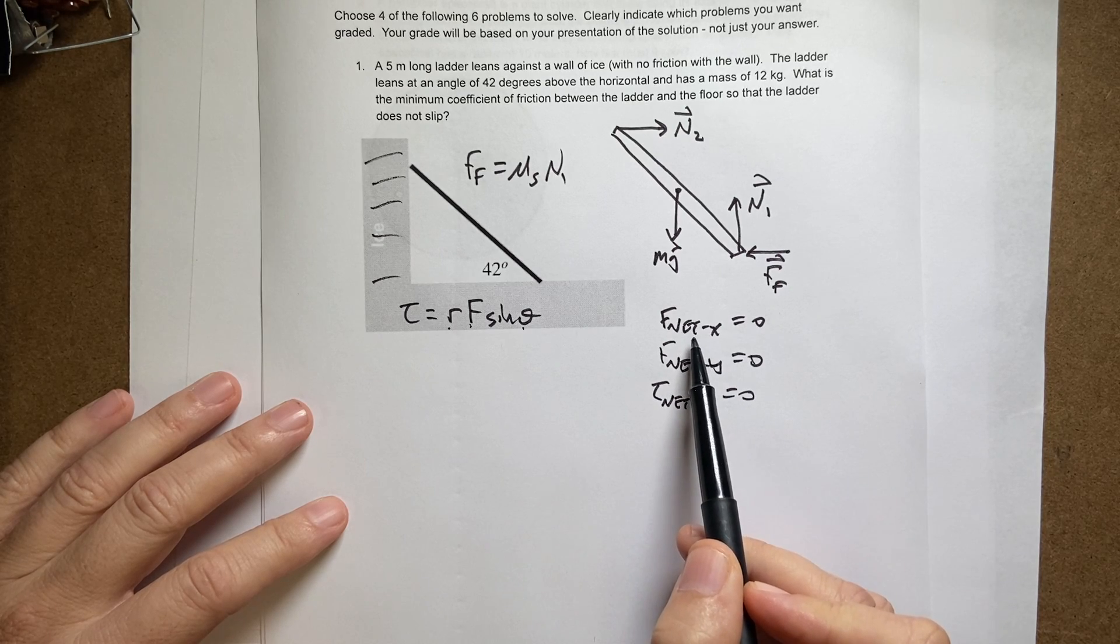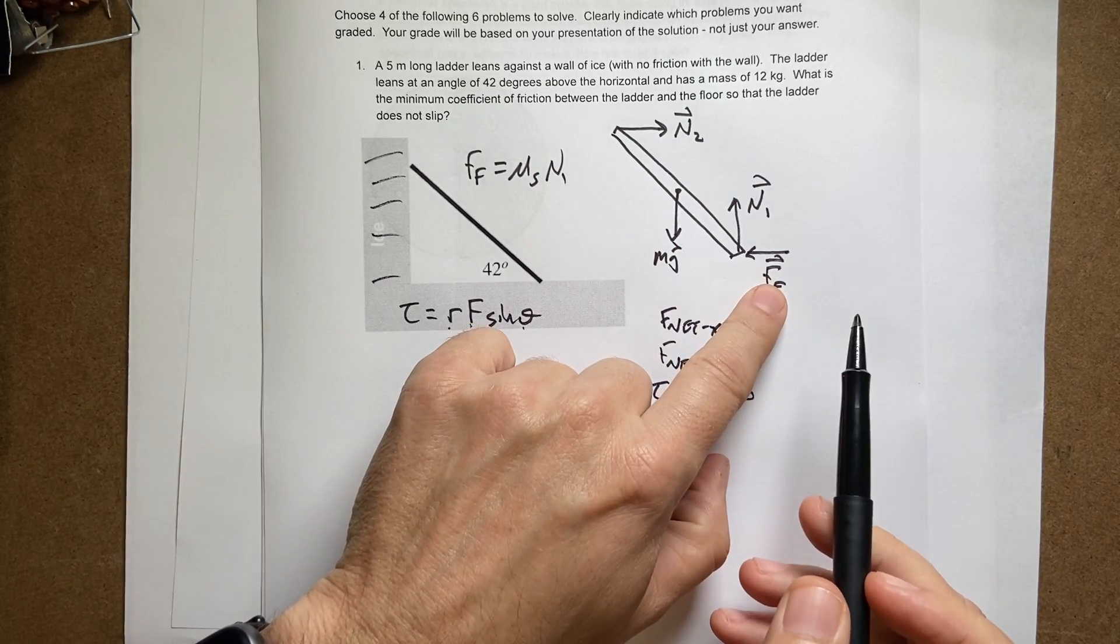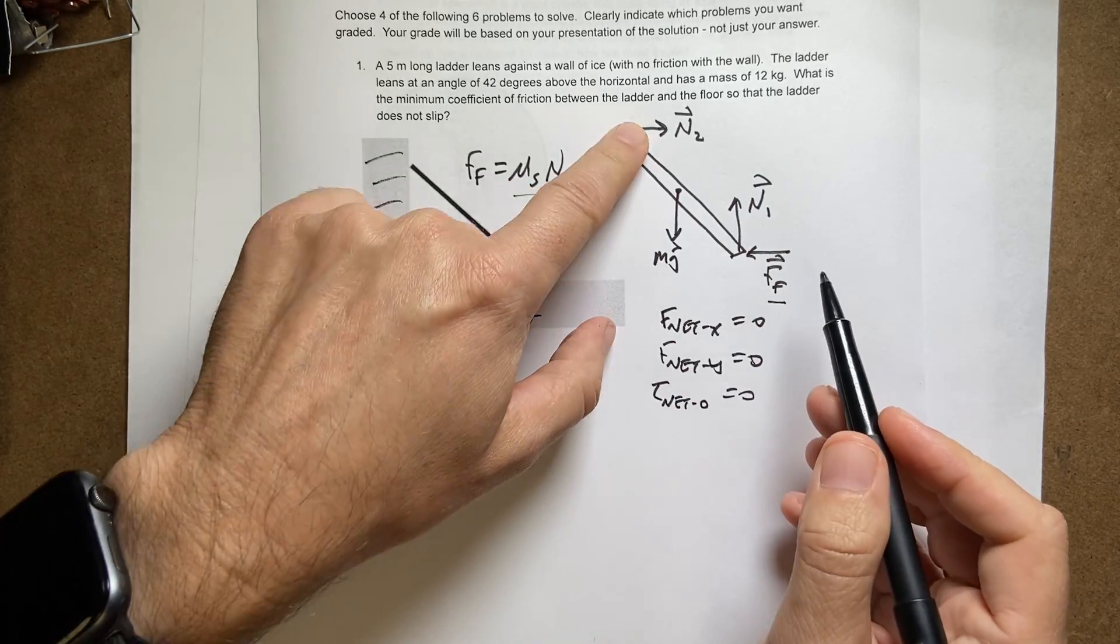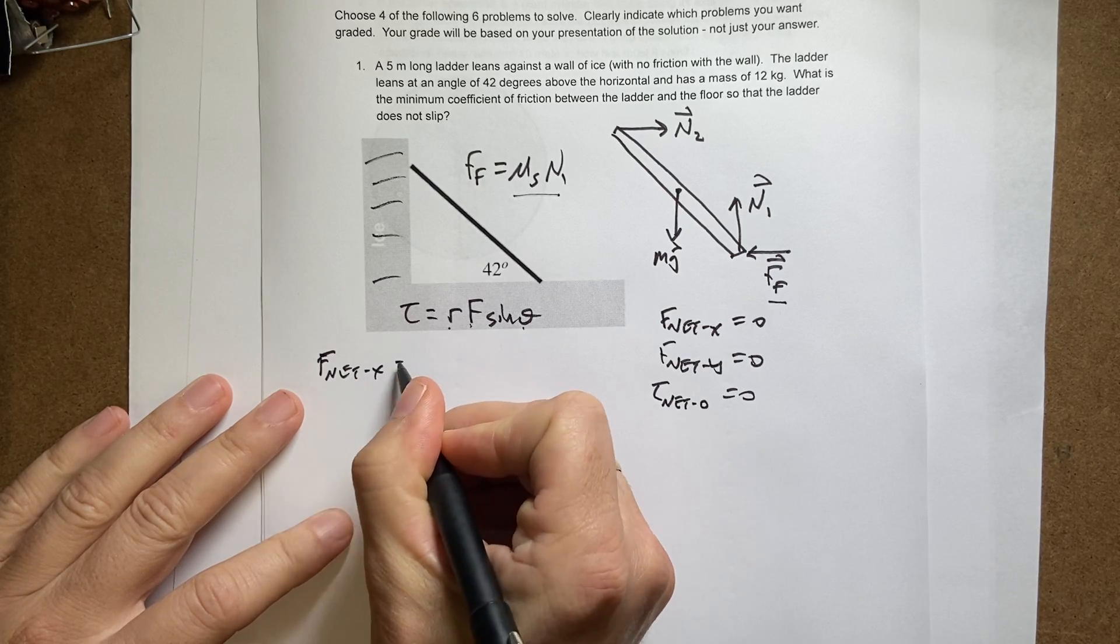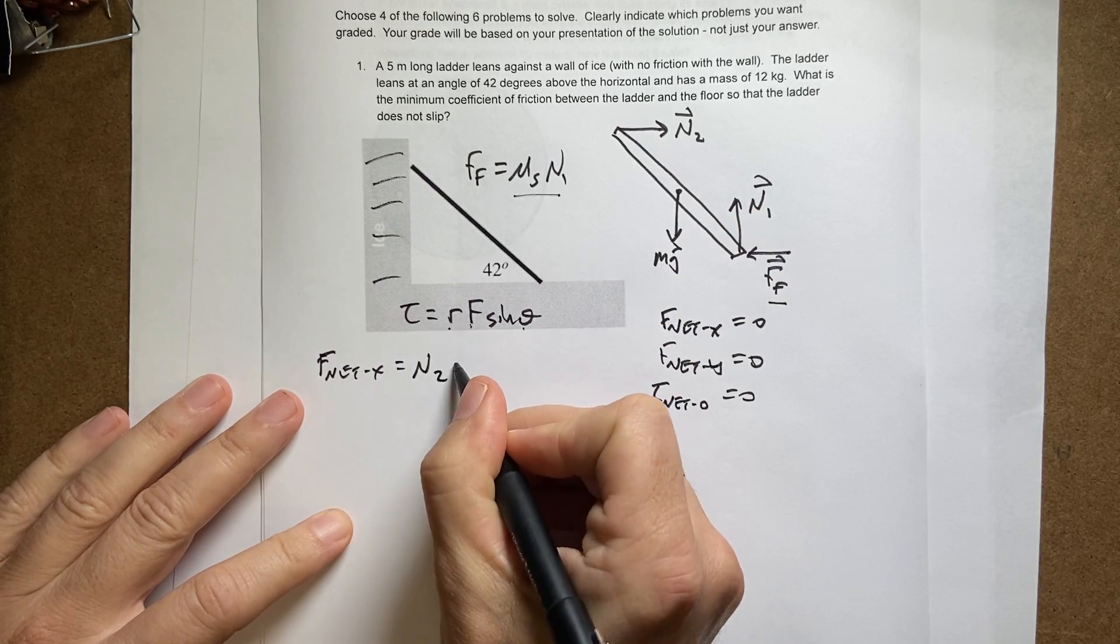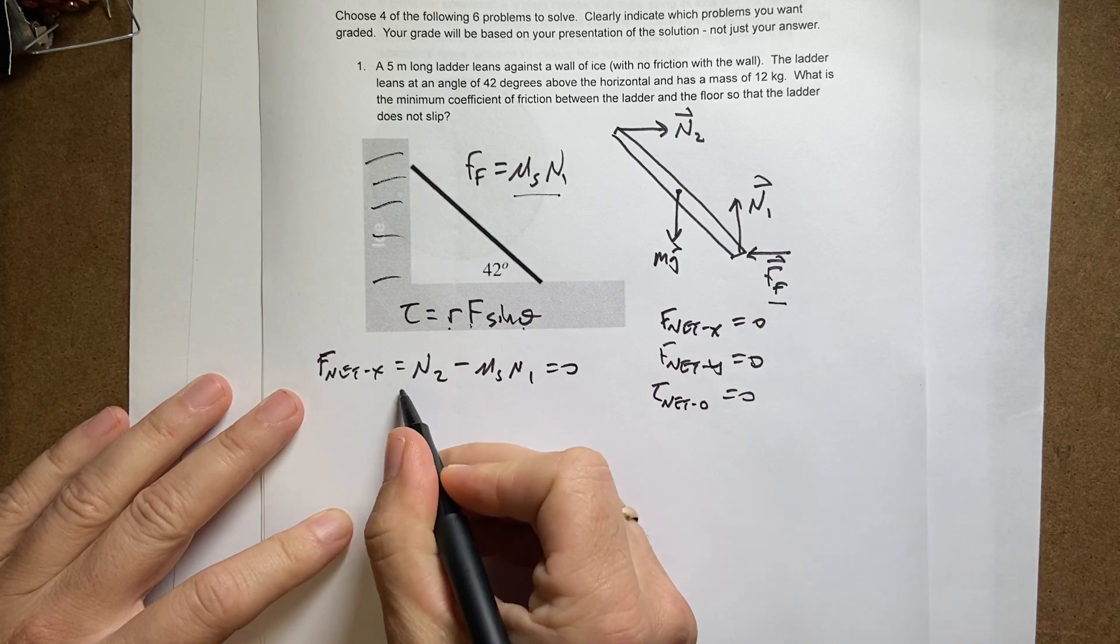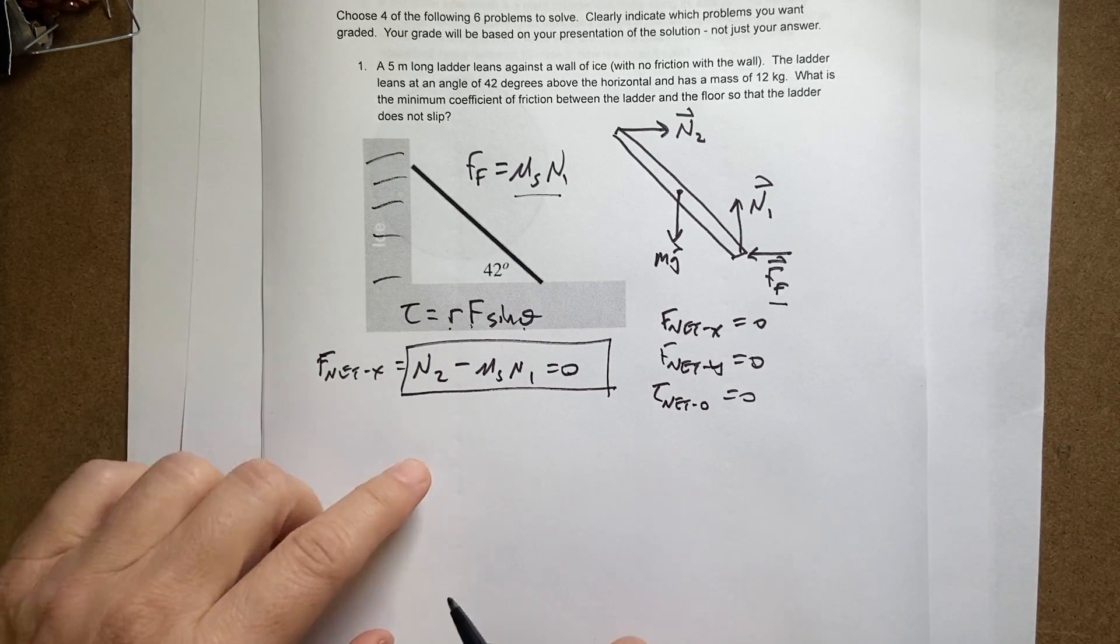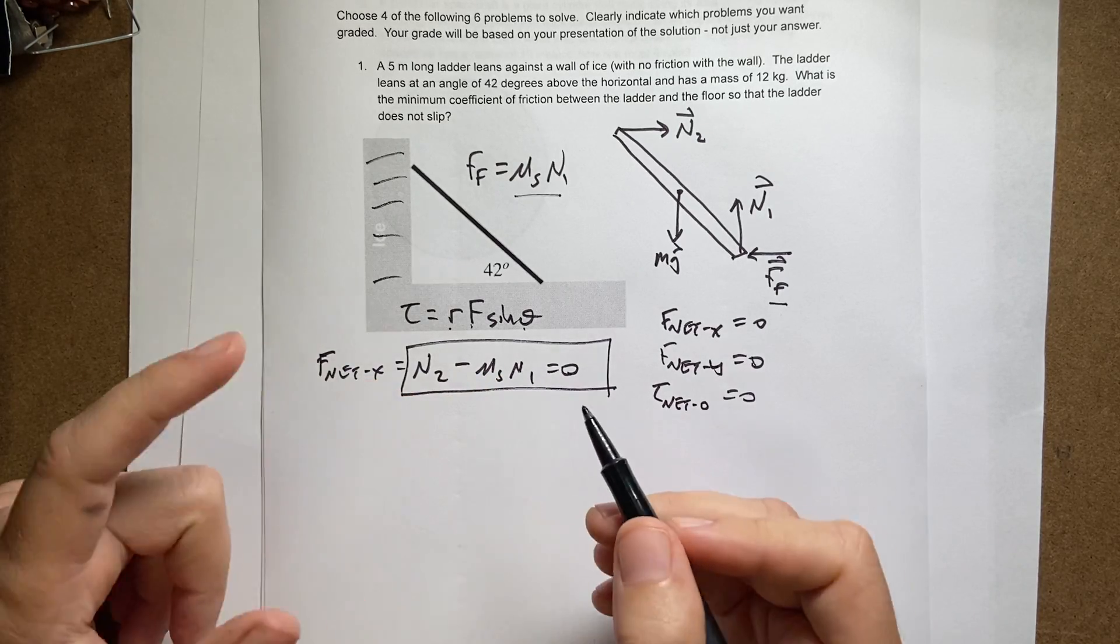So let's write down the X equation first. I'm just going to go ahead and substitute in this for this. So I have F net X. It's going to be N2 minus mu S N1 equals zero. So that's one equation. Now, I can't solve for mu S because I don't know N1 and N2. So that's not very useful.